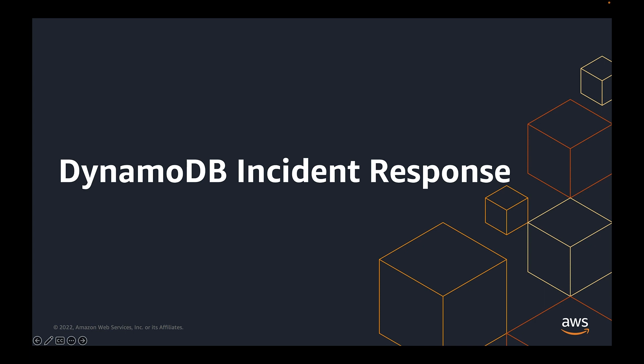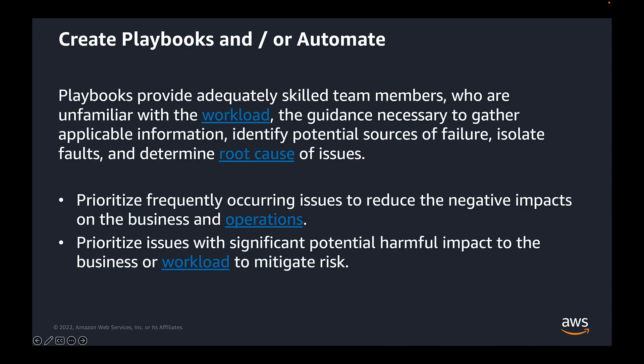For the final topic we cover in the operational excellence pillar — incident response. Create relevant playbooks or even automate some of them. Playbooks provide adequate skilled team members who are unfamiliar with the workload the guidance necessary to gather applicable information, identify potential sources of failure, isolate faults, and determine the root cause of issues. Thereby, you will be able to reduce the negative impact on your business and operations.